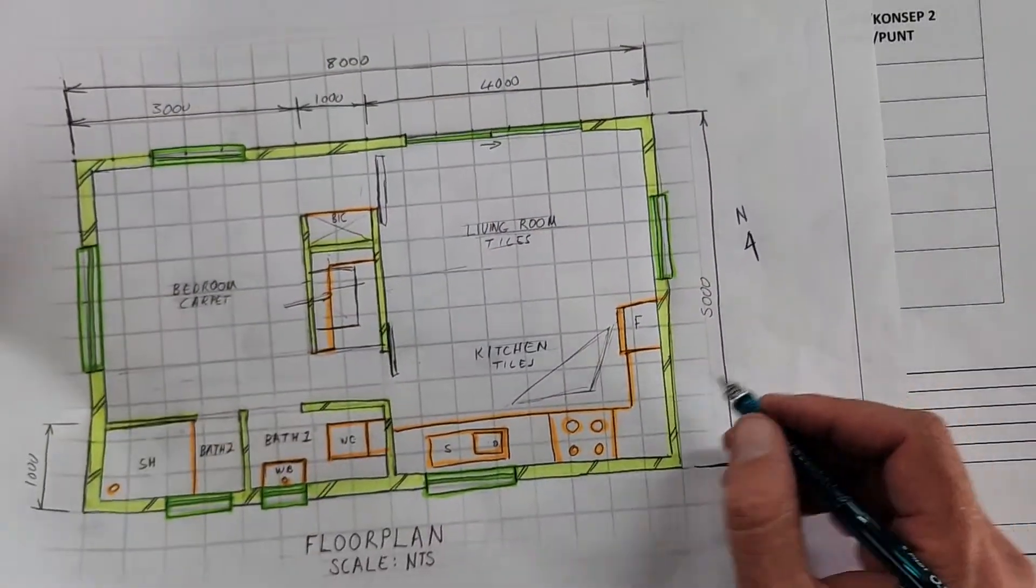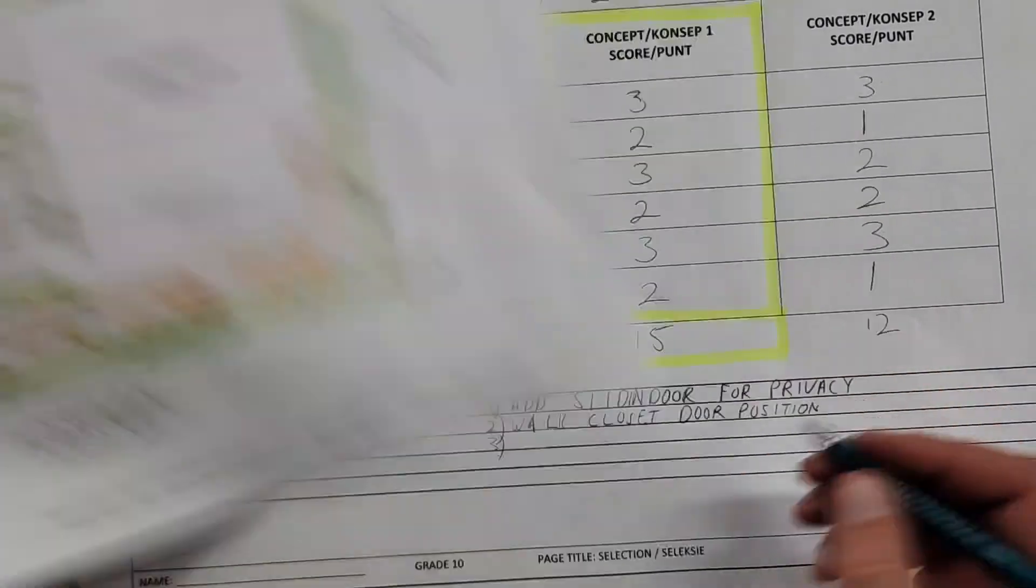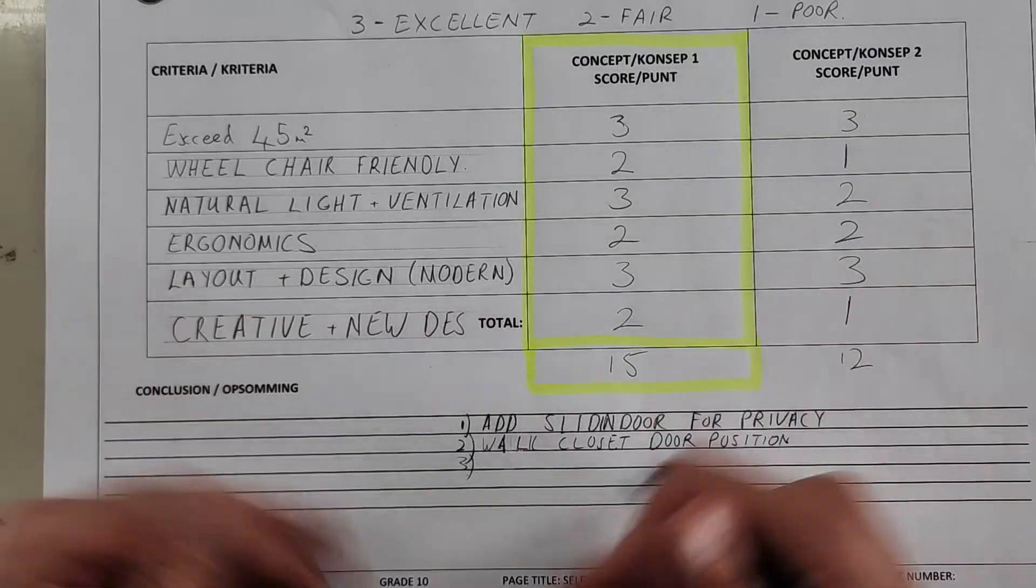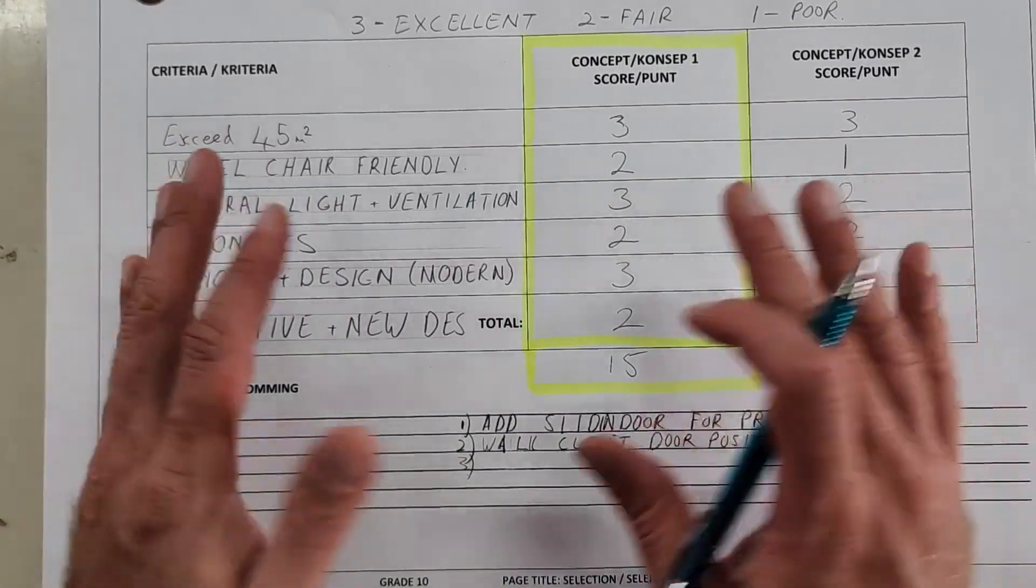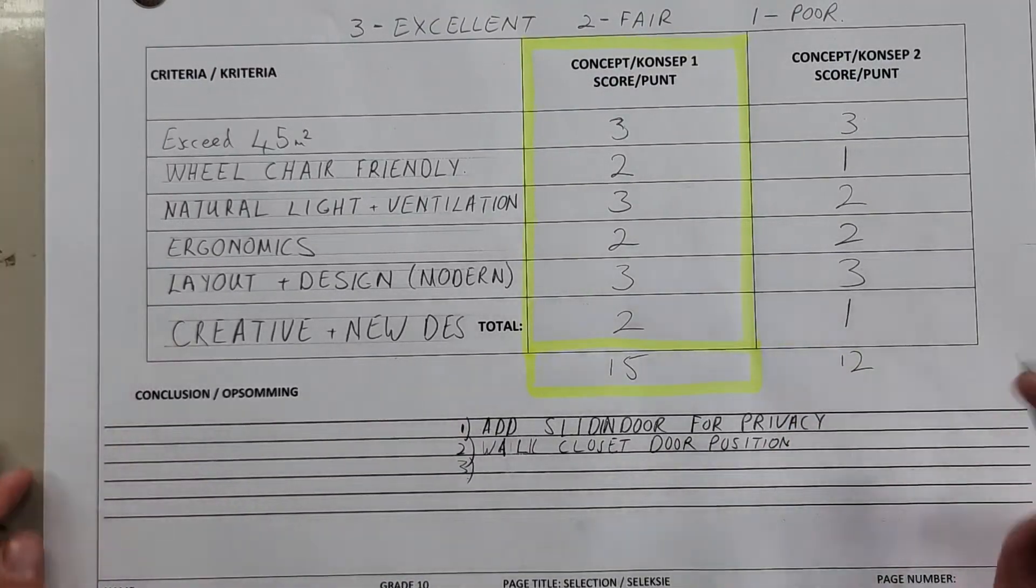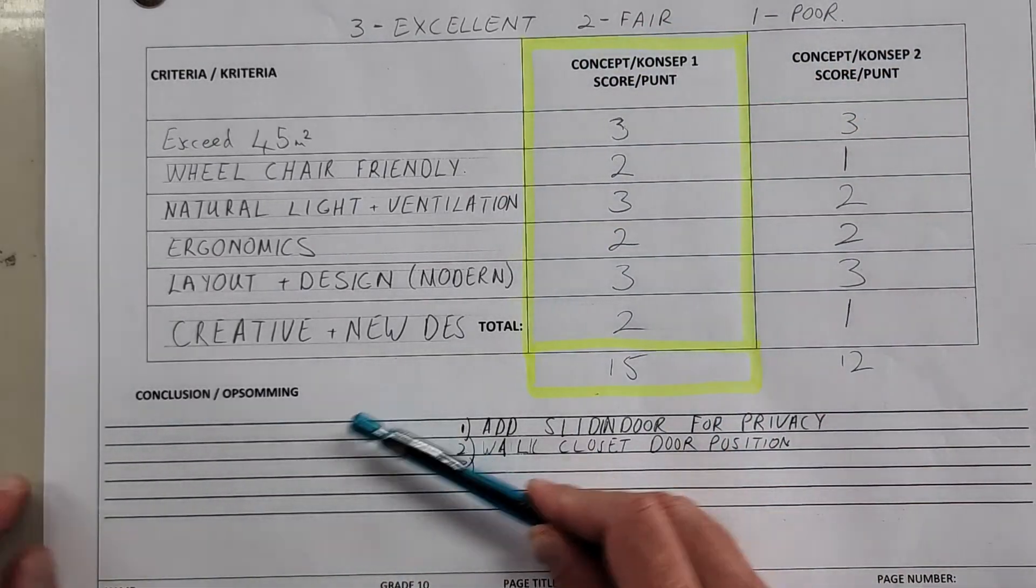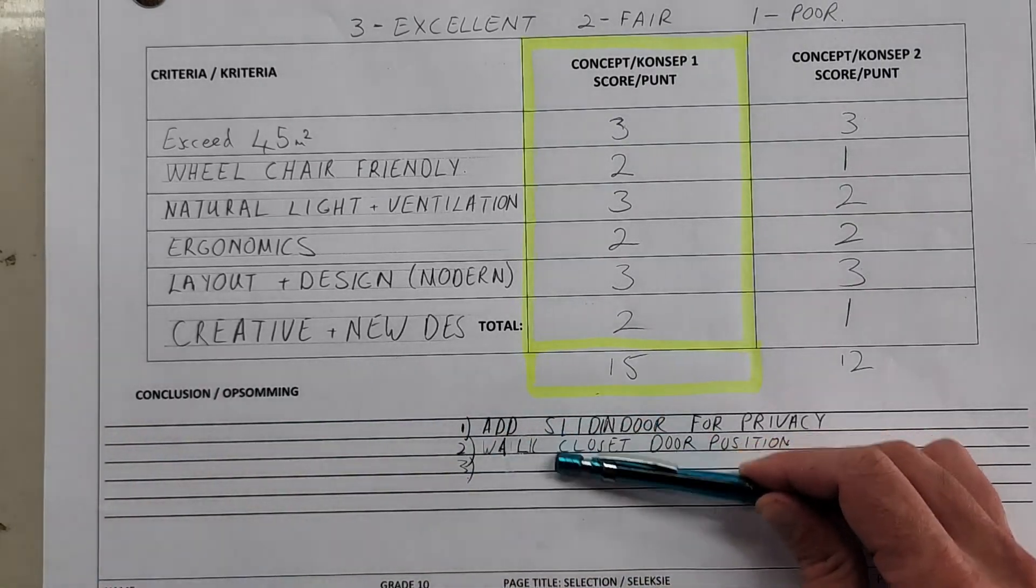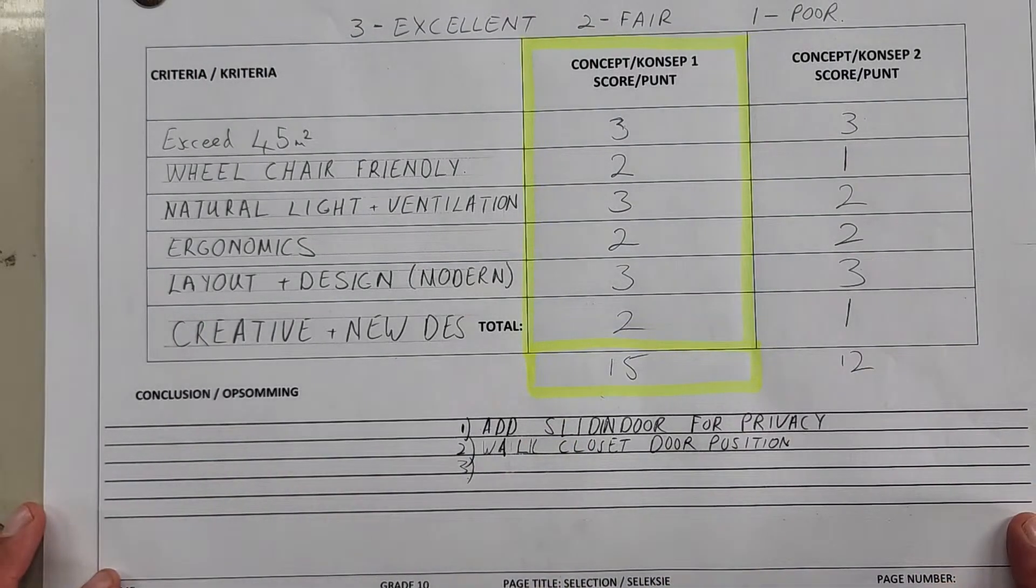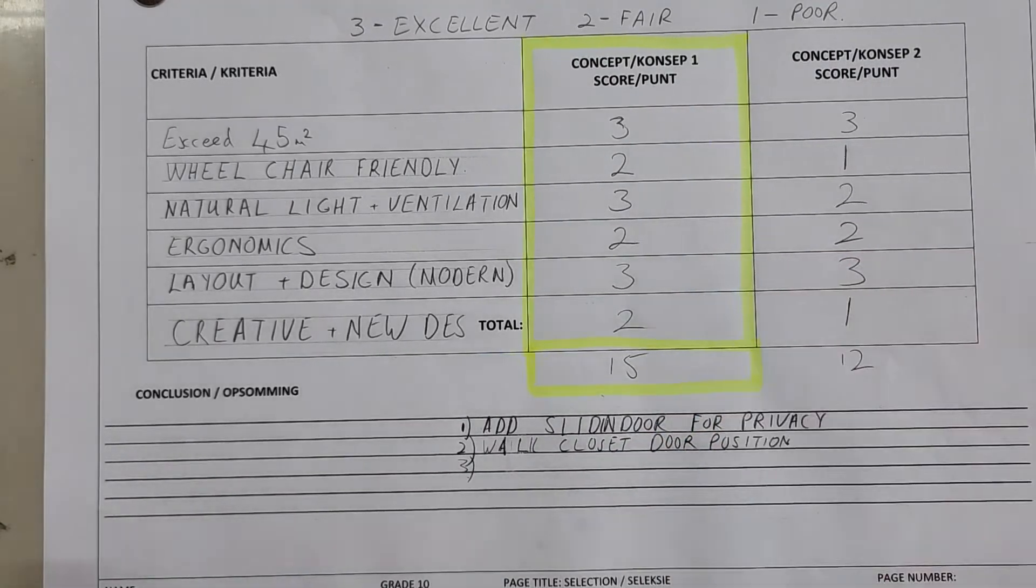The first revision is add sliding doors for privacy. The second one is walk-in closet door position. Maybe there's another third one, I'd like to actually add a window here in the kitchen. When you do write this, please make sure you write it neatly. The components that I require is at least five criteria, a simple grading scale that you've added for yourself, clearly indicate which one is the winner, conclude by saying I've selected concept one or concept two and these are the revisions that are required, and then when we go to our actual floor plan you're going to incorporate these few adjustments. That's it, we've talked through the selection process in EGD, doing the civil PAT for grade 10. Now it's your turn.